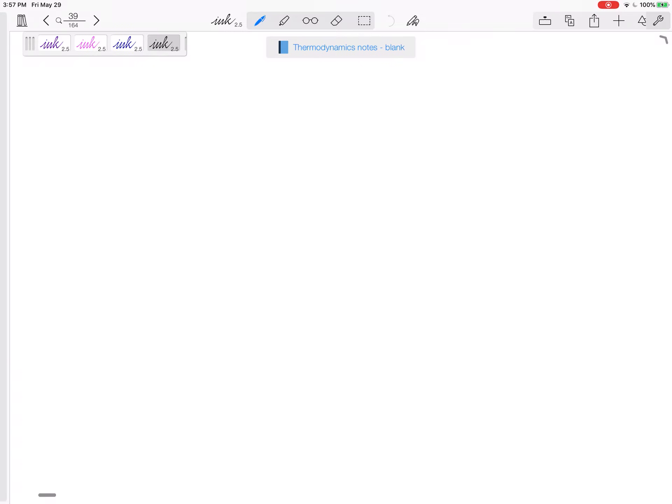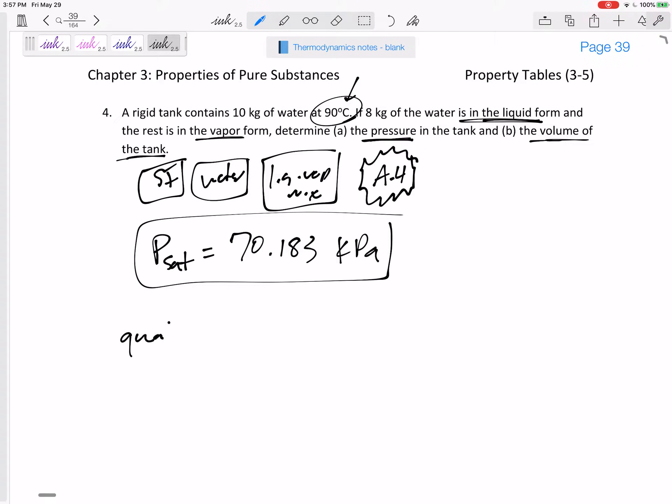So the quality X is mass vapor over mass total. Not mass liquid over mass total, not anything else, but mass vapor over mass total. Write that on your formula sheet and double check to make sure you're doing that correctly. So this would be a total of 10 kilograms.